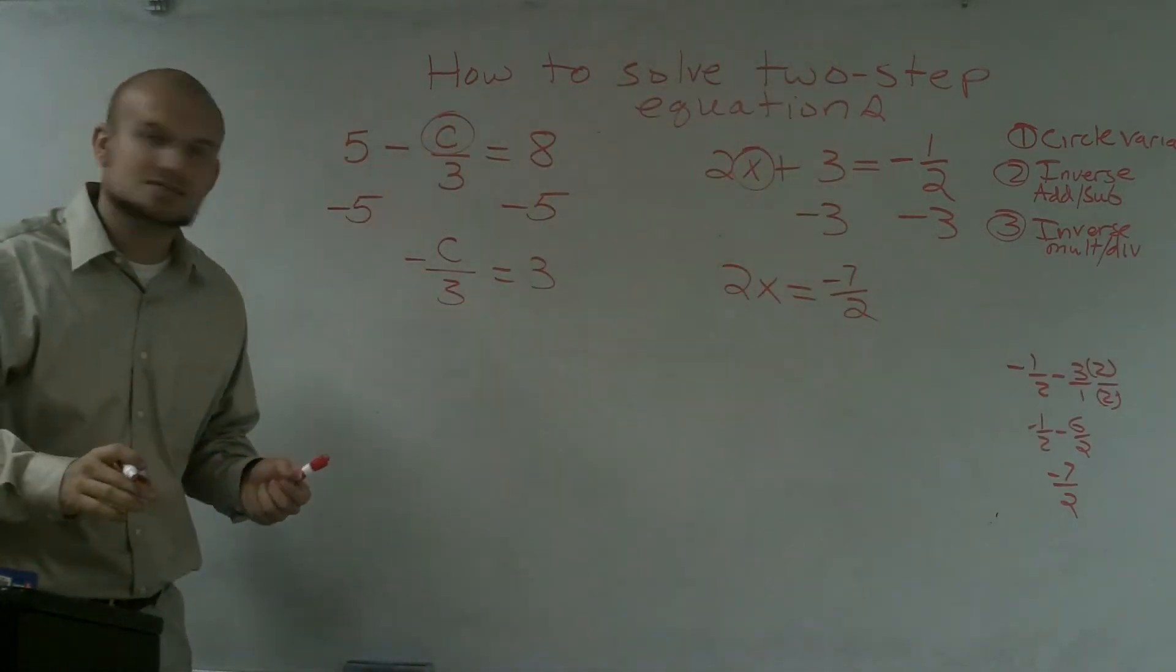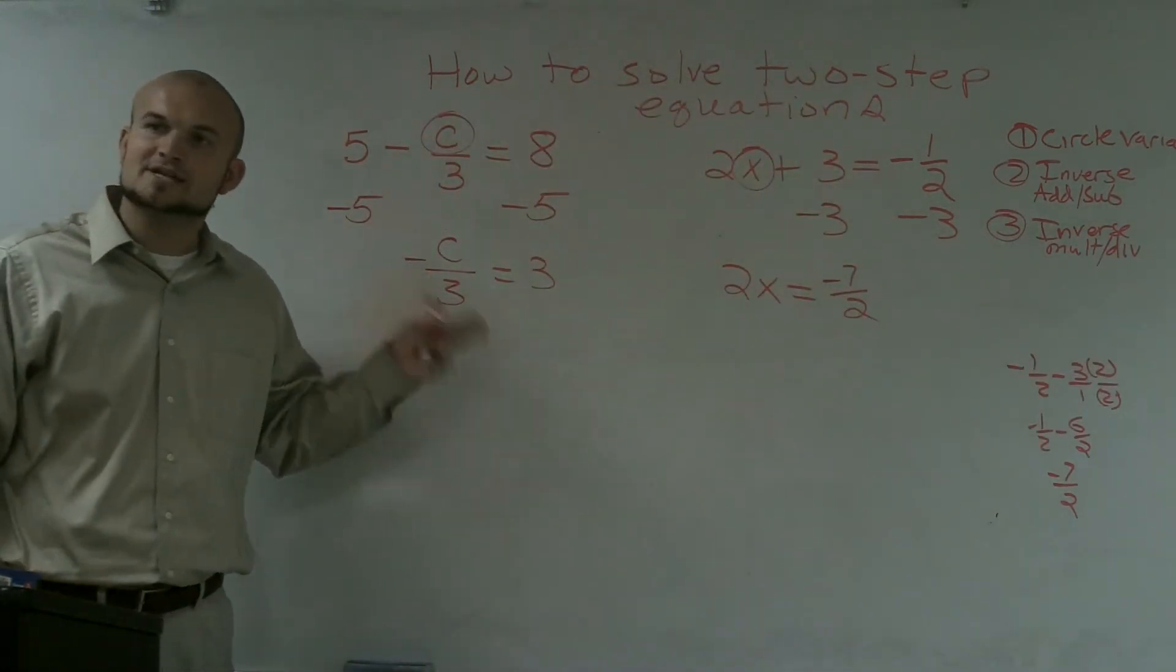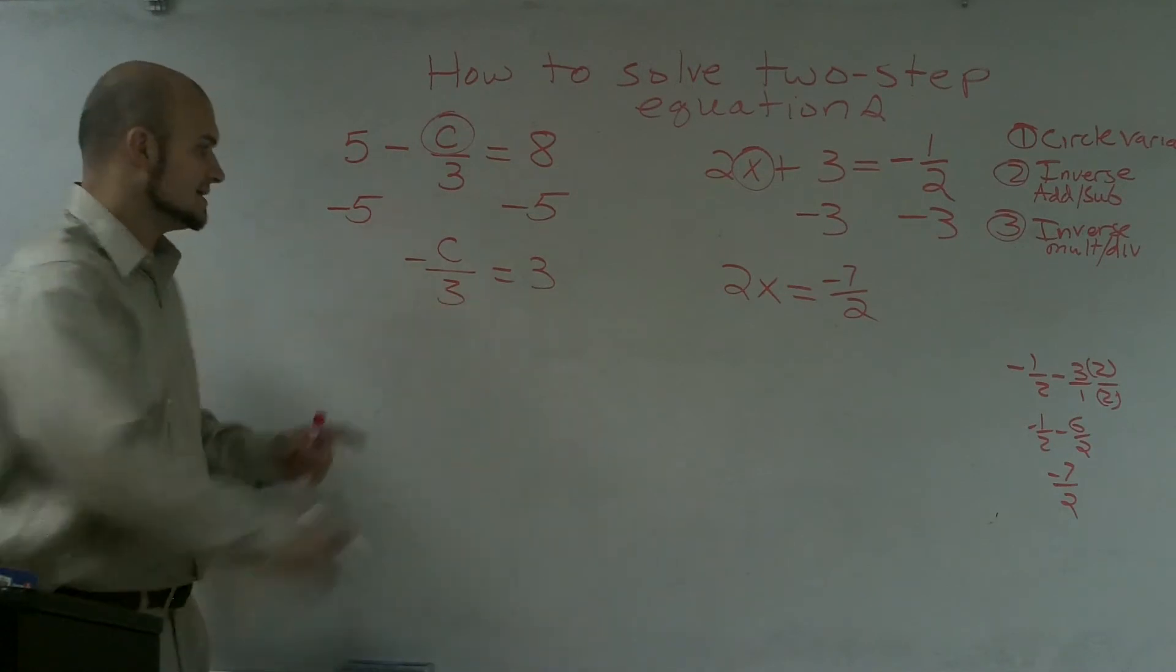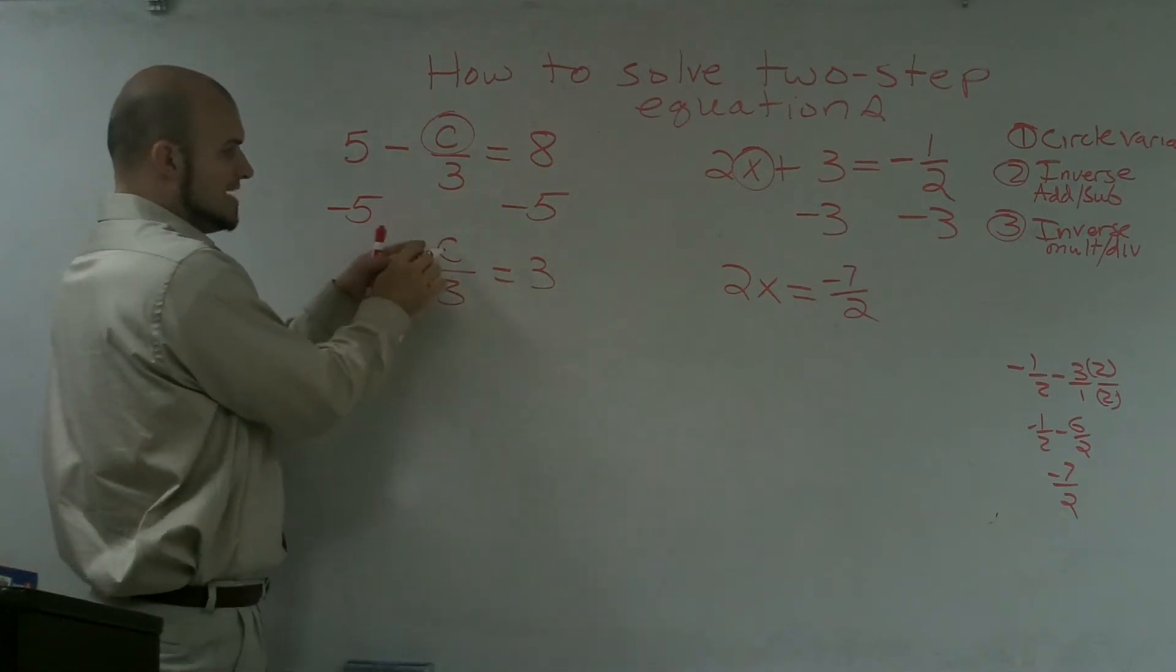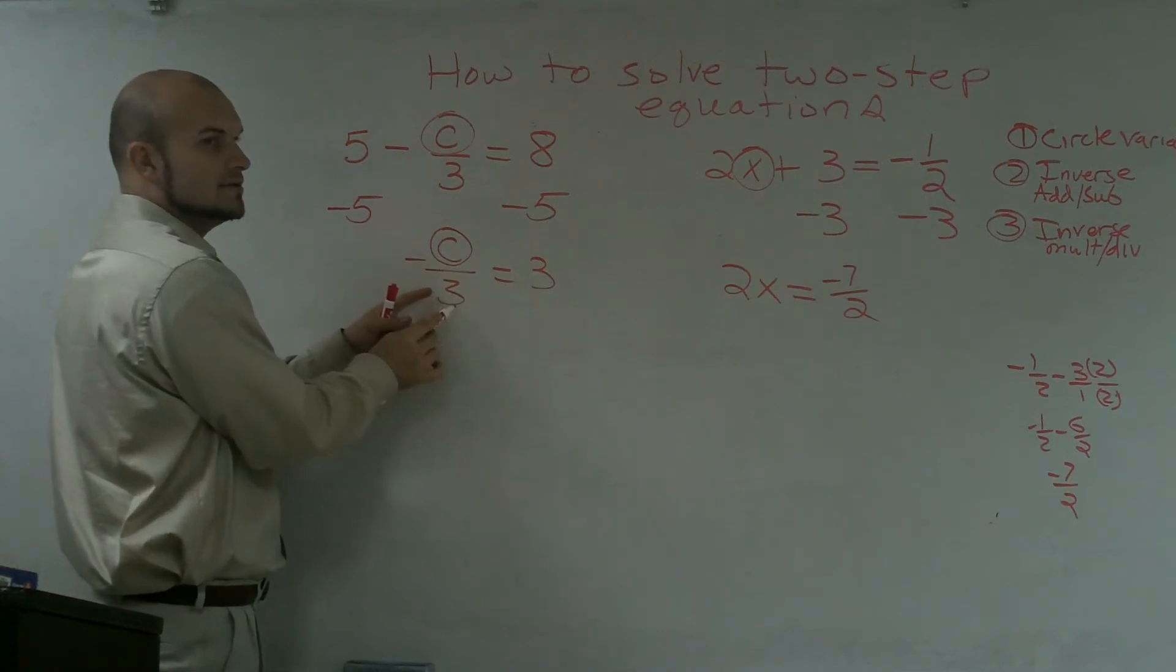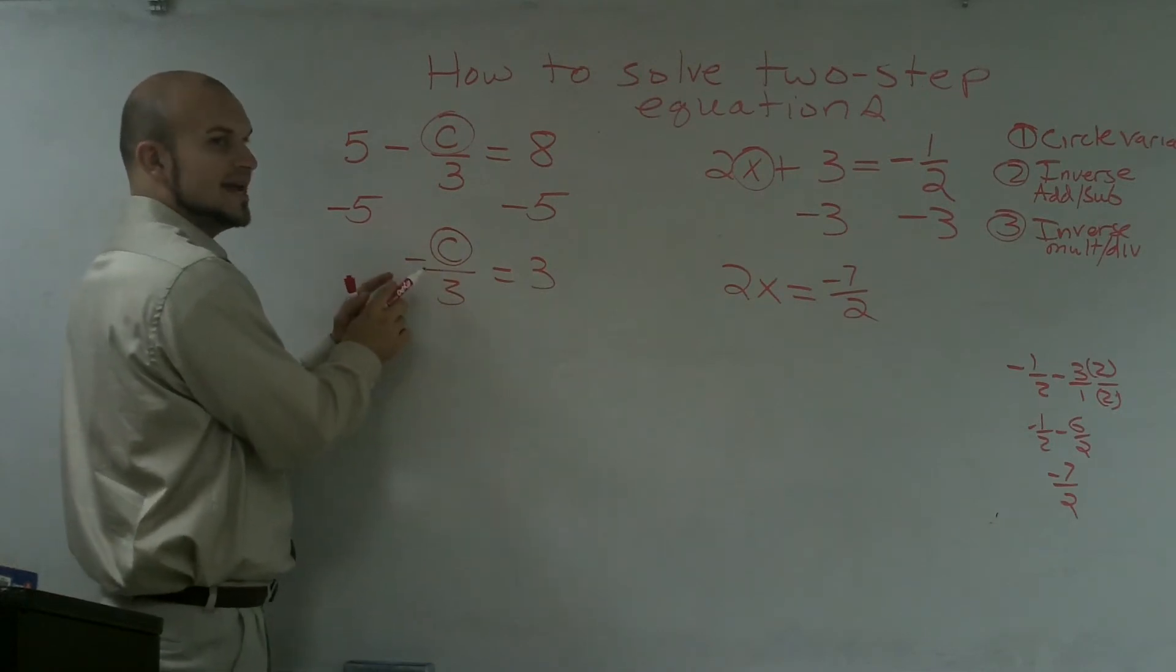So, now I need to look at these two problems, and I say, all right, is there multiplication or dividing going on? And I can say, yes. My variable is being divided by 3. And then, therefore, I also have this negative sign here.